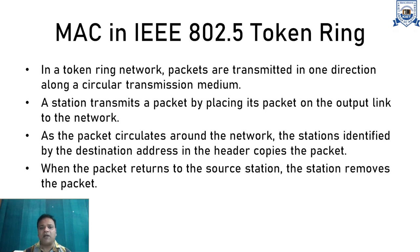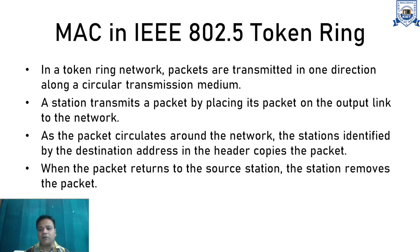Now we move on to the next standard, IEEE 802.5 token ring, which is a LAN standard. In a token ring network, packets are transmitted only in one direction in a circular transmission medium. A station transmits a packet by placing it on the output link to the network. As the packet circulates, the station identified by the destination address copies the packet, and when it returns to the source station, the source removes it.